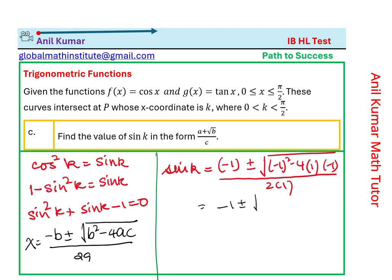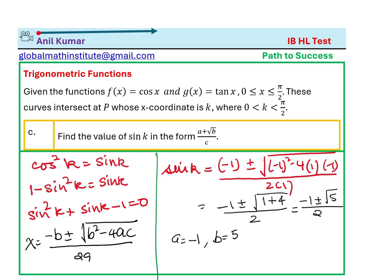So that gives us the value of -1 plus or minus square root of 1 plus 4, over 2, which is -1 plus or minus √5 over 2. So it's written in the form (a + √b)/c, so a equals -1, b equals 5, and c equals 2. Do you see that? So that is how we can get part c. I hope the steps are absolutely clear.